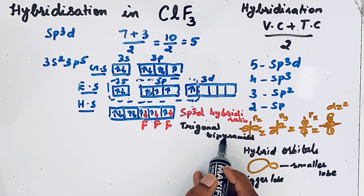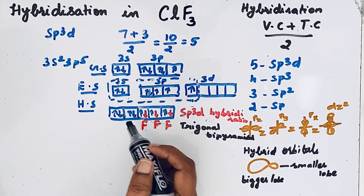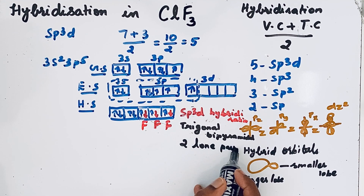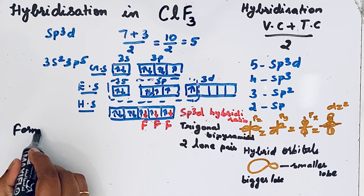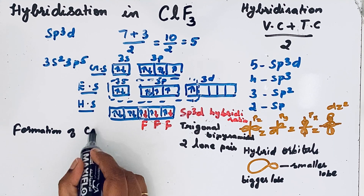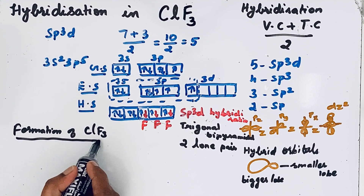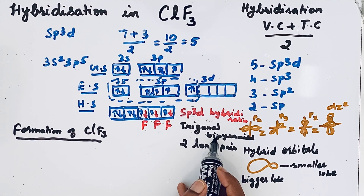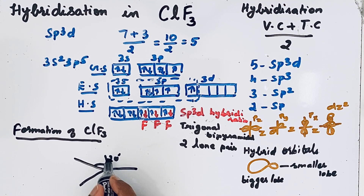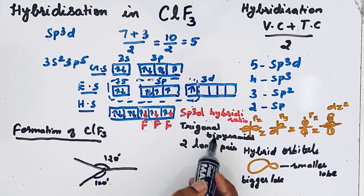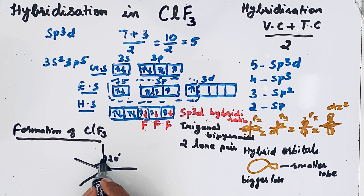Due to sp3d hybridization, the theoretical molecular structure would be trigonal bipyramidal. However, there are two lone pairs of electrons present. In a trigonal bipyramidal structure, one angle is 180° and another is 90°. The equatorial plane has three positions at 120° to each other, and the axial positions are at 90°.